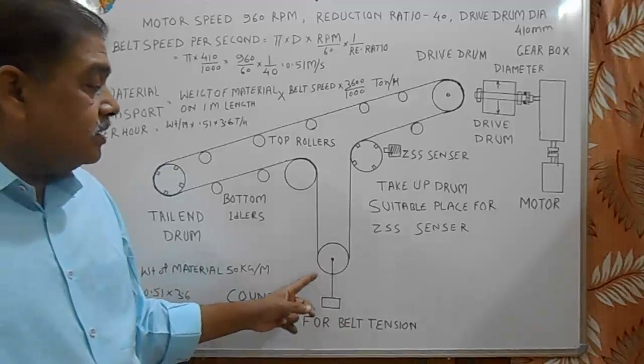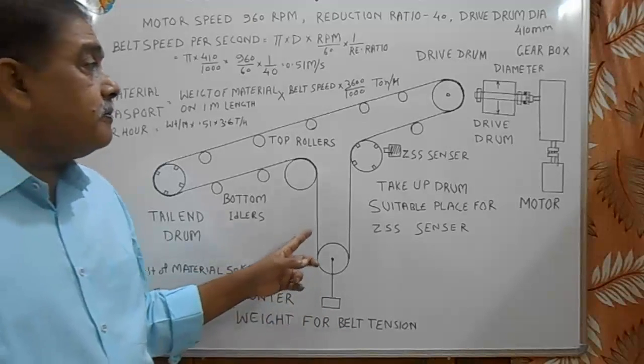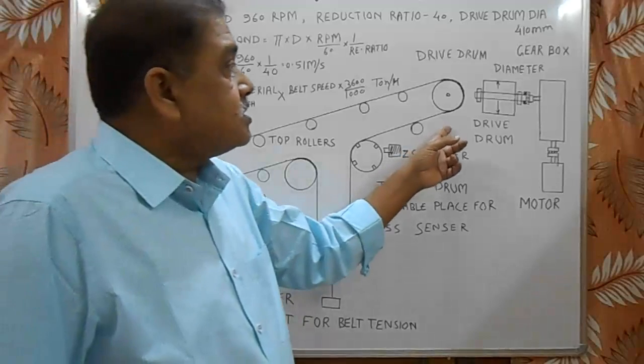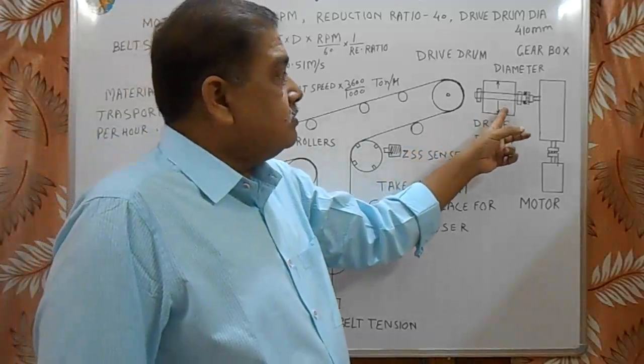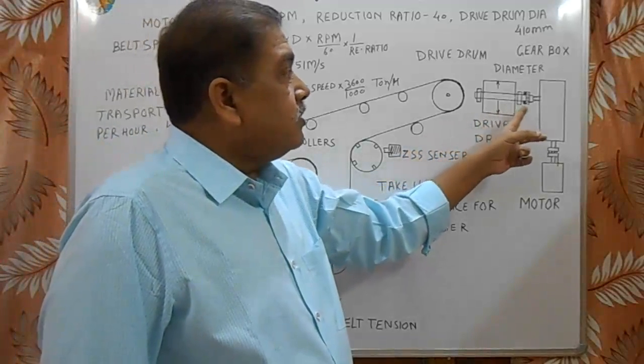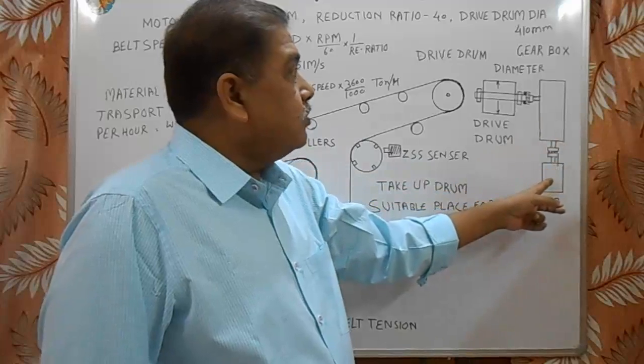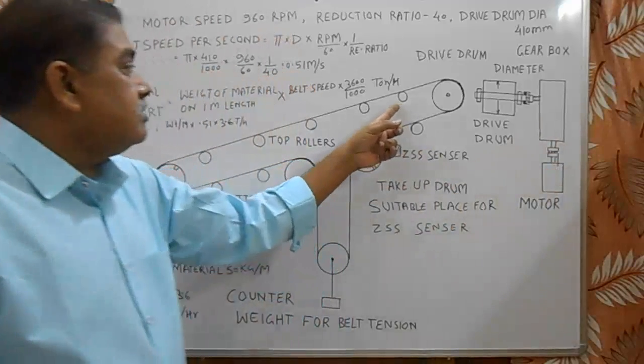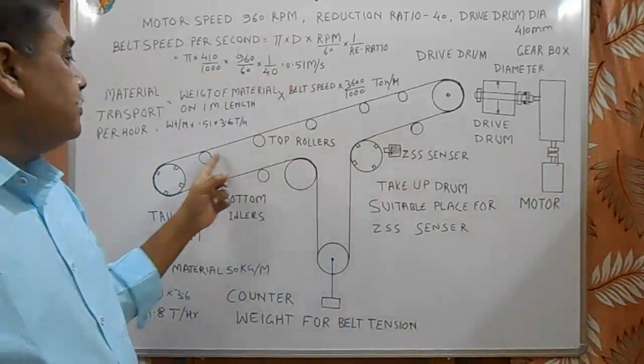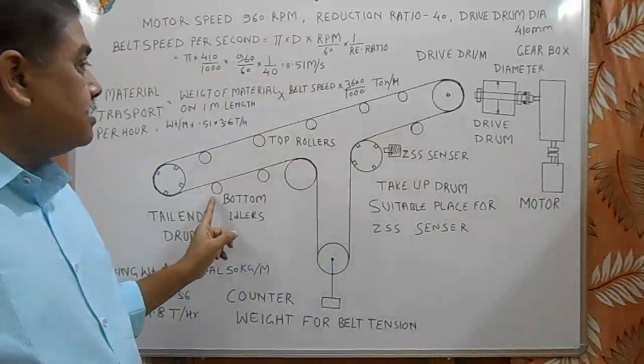This counter weight gives tension to the whole belt. Here drive system has drive drum, gearbox and motor. These are top support rollers and these are bottom idlers.